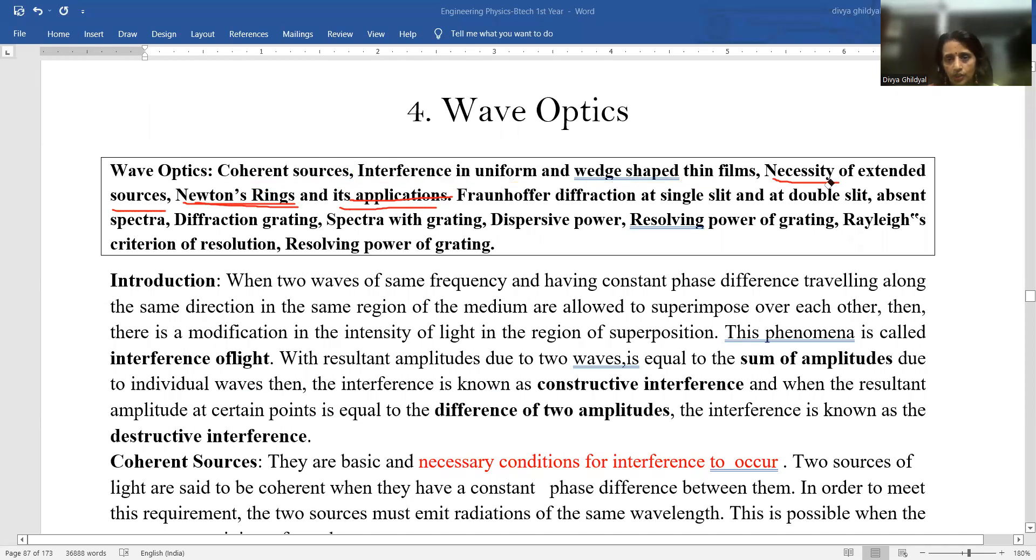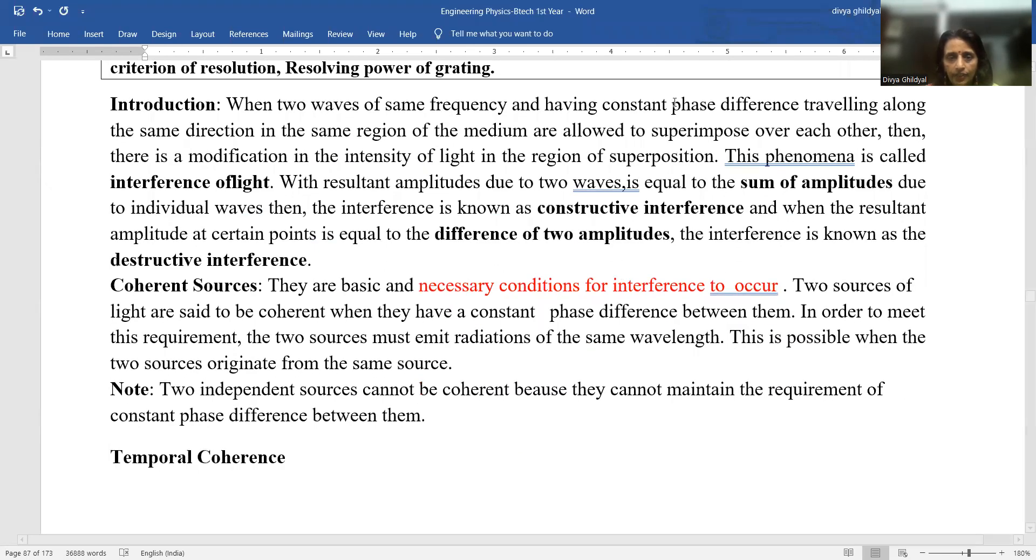So let us begin with the syllabus fast. What are coherent sources? Before we begin with that, let us just take a very quick idea of what is exactly interference. Interference word is derived from the English word to interfere. That means one person is going on a straight road and the other person interferes. We have one wave of light with y1 and the other with y2. When they interfere, then from the principle of superposition of light, y becomes equal to y1 plus y2.